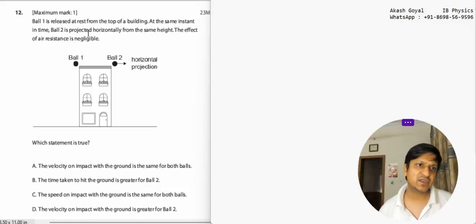Hello dear student. Now we have another question. Ball 1 is released from rest from the top of a building and at the same instance, ball 2 is projected horizontally from the same height. The effect of air resistance is negligible.